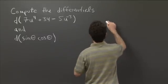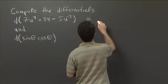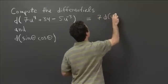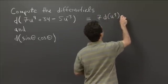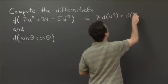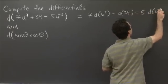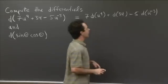So this is equal to 7 d of u to the ninth plus d of 34 minus 5 d of u to the minus third.